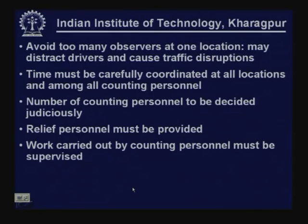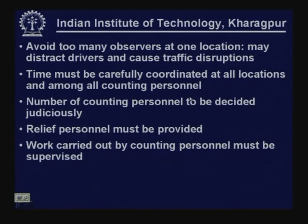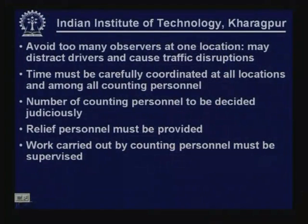Avoid too many observers at one location, as this may distract drivers and cause traffic disruption. We want to record natural conditions, and if too many people gather in one place, drivers' natural movement may get disturbed. Time must be carefully coordinated at all locations and among all counting personnel. If three intersections are being covered simultaneously, all personnel should start at exactly the same time — otherwise differences in recorded time will create difficulties during analysis.